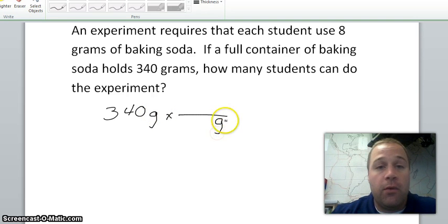We're going to write times and a line. We know we want to get rid of grams, so grams is going to go on the bottom, and we want students up top. I'm just going to put s for students. In the problem it says every one student needs eight grams. So that's our conversion factor that we write out. Again, three forty times one, multiplying across the top, dividing by eight. So it's three hundred and forty divided by eight. It's going to be forty two and a half.